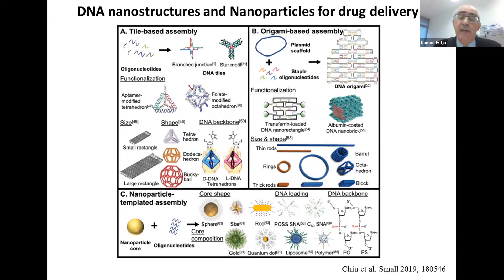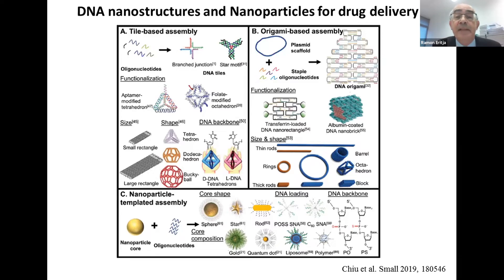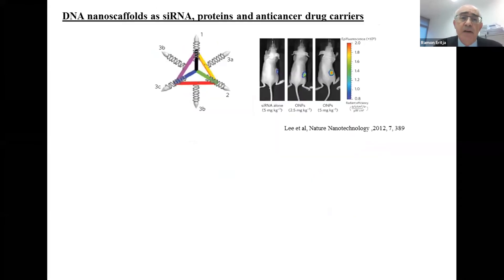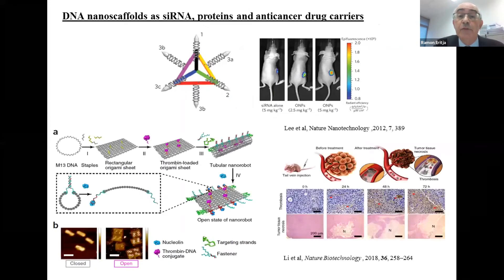In the field of nanostructures, origami uses M13 and makes objects of 100 nanometers, while other techniques without M13 can provide different sizes, from very small 10 nanometers to hundreds of nanometers. One example is a tetrahedron that carries siRNA with a folic acid. When injected into animals, you get reduction of a tumor because the siRNA is selectively addressed to these tumors.